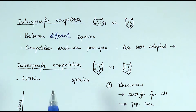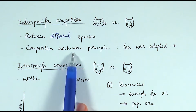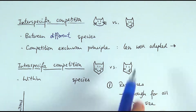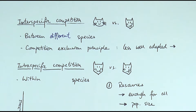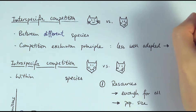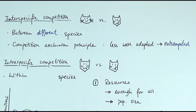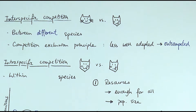Between two different species, they exhibit something called the competition exclusion principle. The one that is less well adapted will be out-competed. That means one species is not as well adapted as the other to compete for that resource, so they fail in that competition and cannot get the resources they need to survive. As a result, the population size of the less well adapted species will decrease, sometimes until elimination — they either go extinct in that environment or move to another area to find that resource.